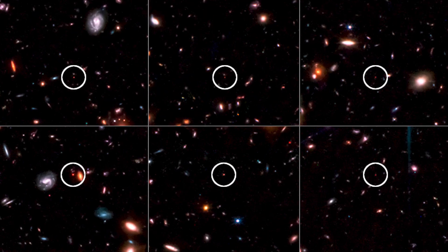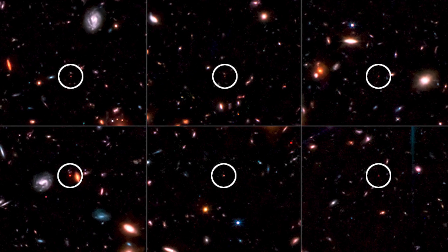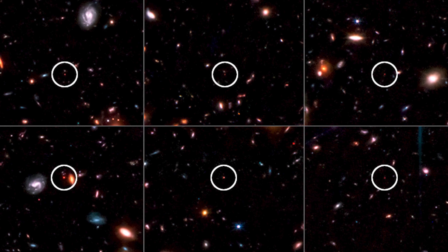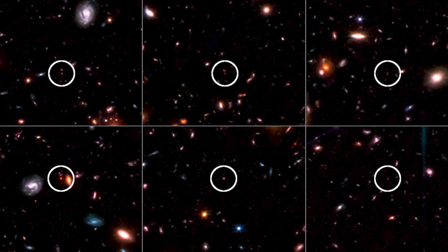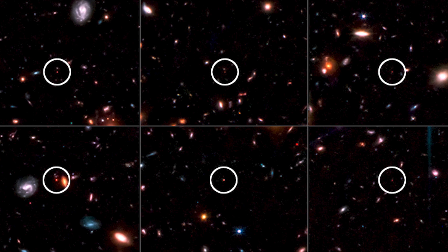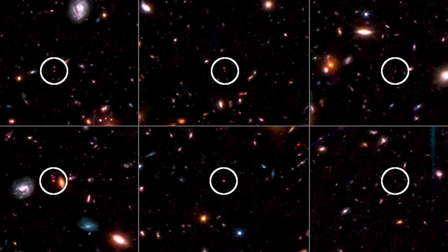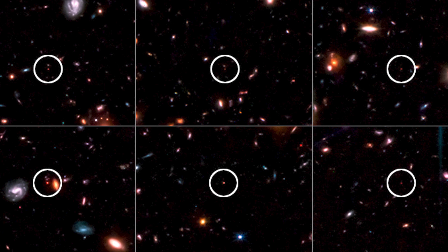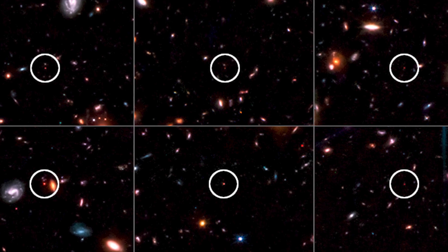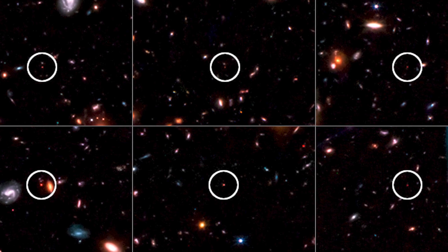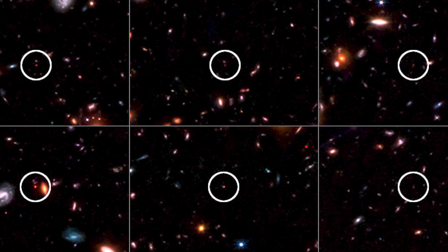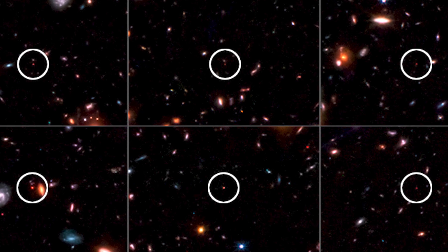These findings are surprising and puzzling for several reasons. First, they imply that these galaxies originated rapidly and efficiently in a short period of time, transforming most of their available gas into stars. This contrasts with the conventional view of galaxy formation, which predicts that galaxies start small and gradually grow by merging with other galaxies or by accreting gas from their surroundings.